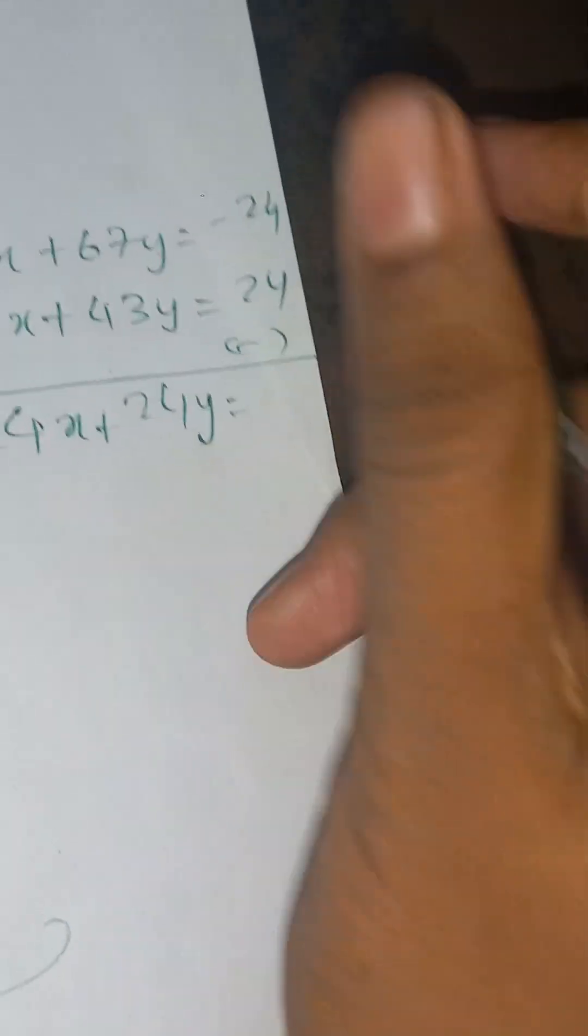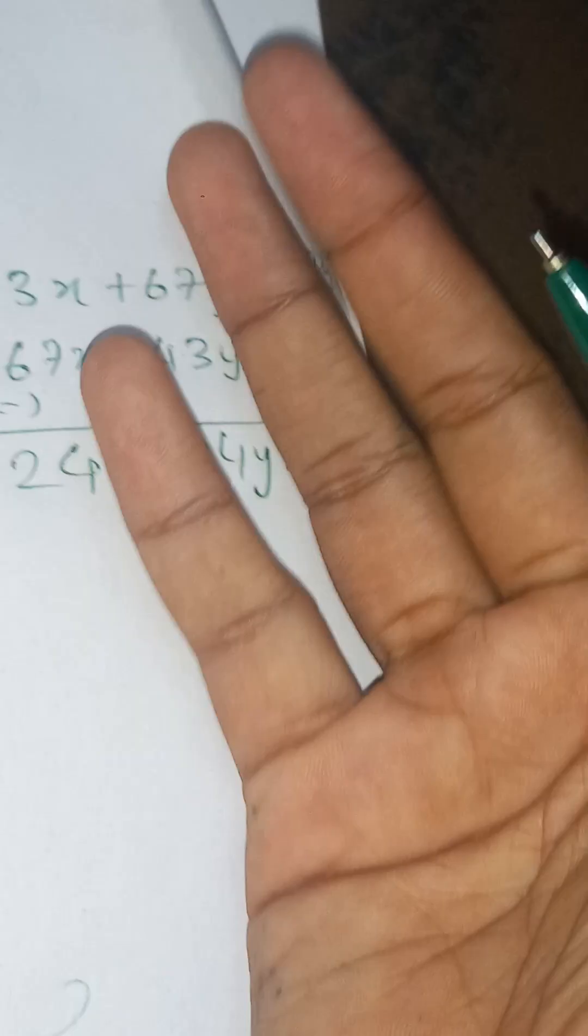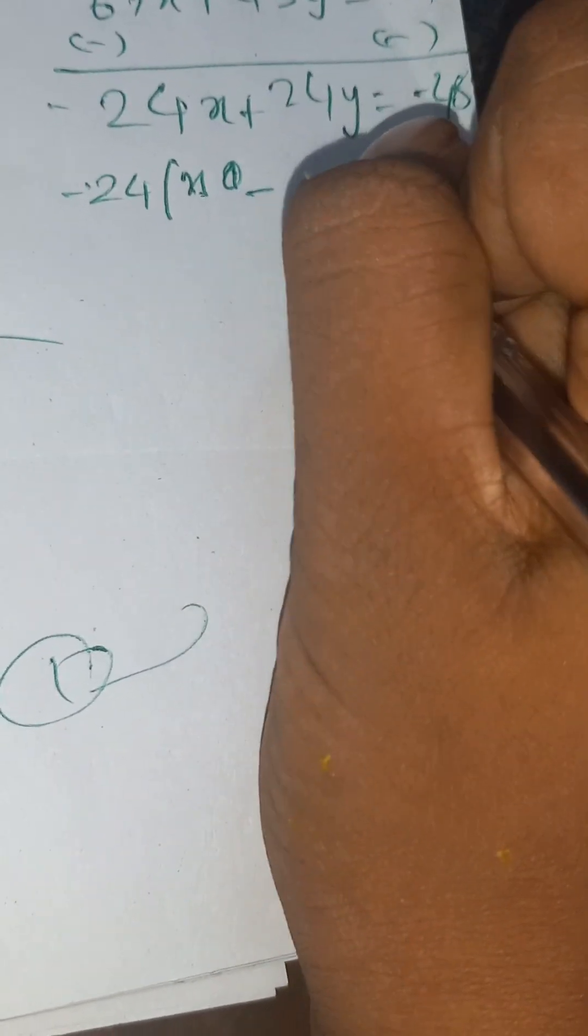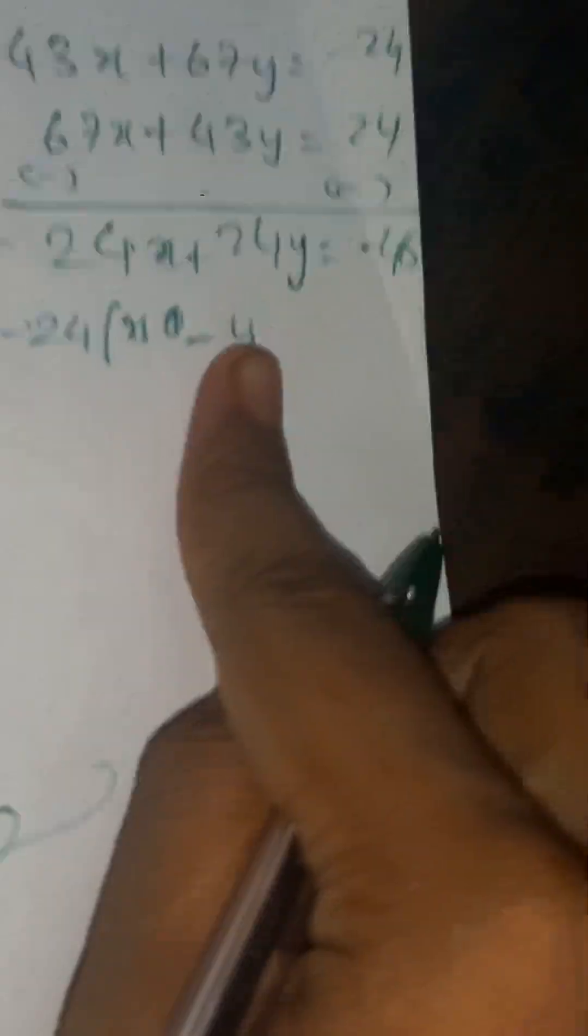Which is equal to -48. The signs will get changed. Even here you can take common -24, so -24(x - y). You can take minus only because minus times minus is plus.